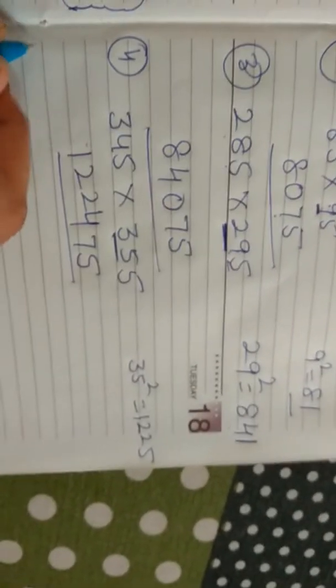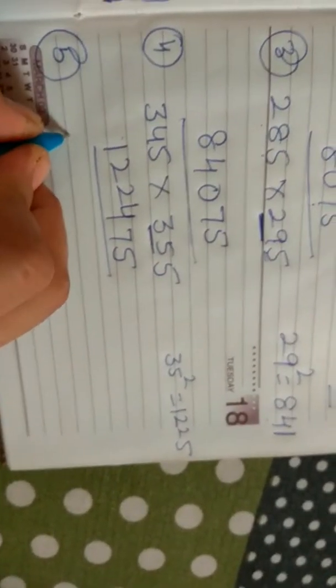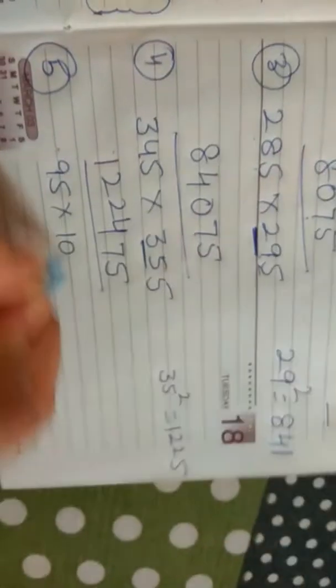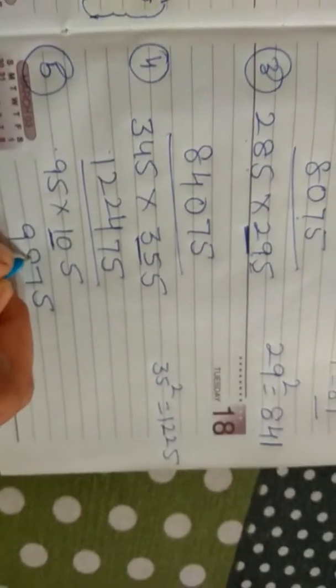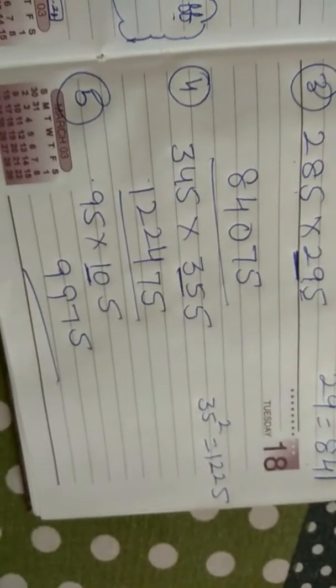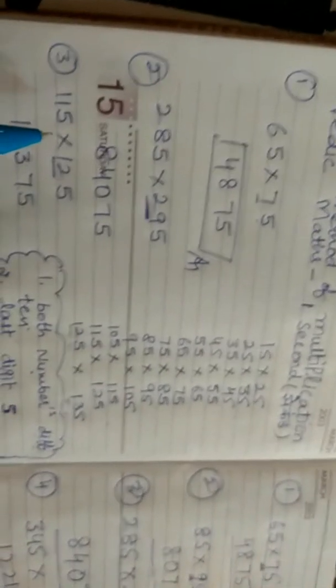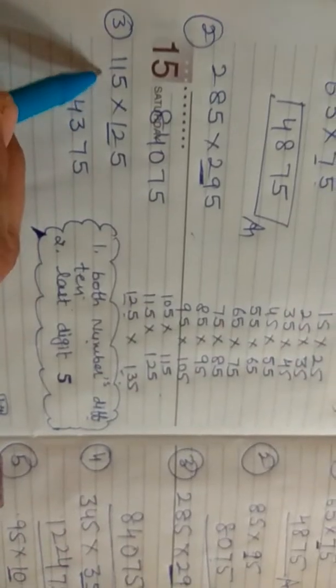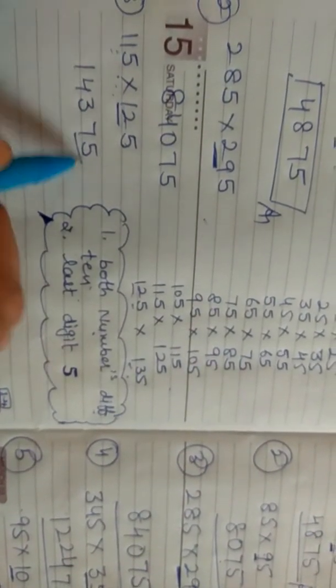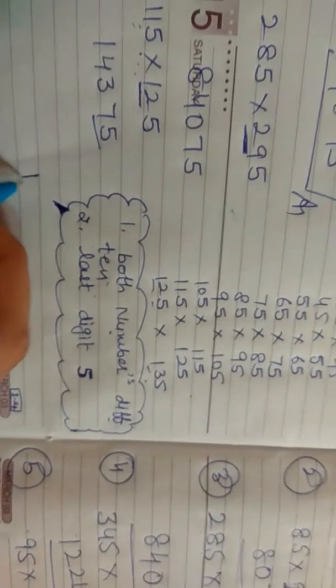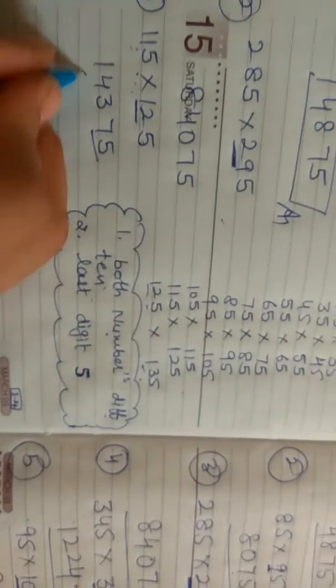See one more: 95 into 105. Write 75. Square this, which is 100. From 100 minus 1 is 99. This is our answer: 9975. See how easy. One more: 115 multiply 125. Write 75. Square this, which is 144. From this minus 1 is 143. Answer: 14375.